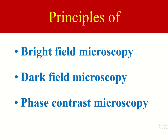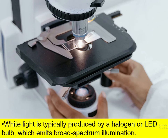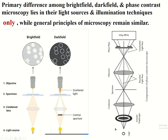In this video I discuss principles of bright field microscopy, dark field microscopy, and phase contrast microscopy. The illuminating difference are the key differences in this type of microscopy. White light is typically used, produced by an LED bulb which emits broad spectrum illumination. The primary difference among these microscopy types lies in their light source and illuminating technique, while general principles of the microscope remain similar.